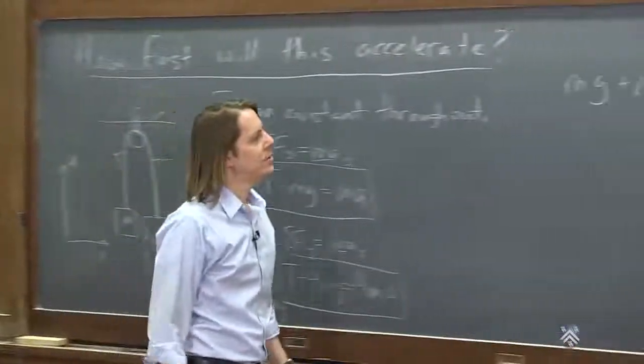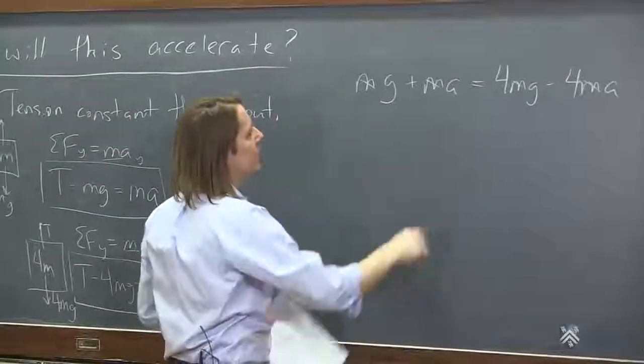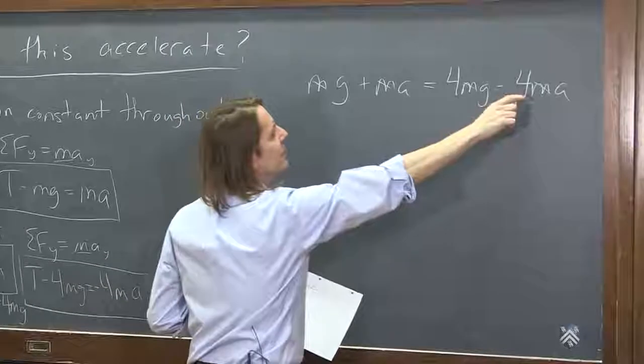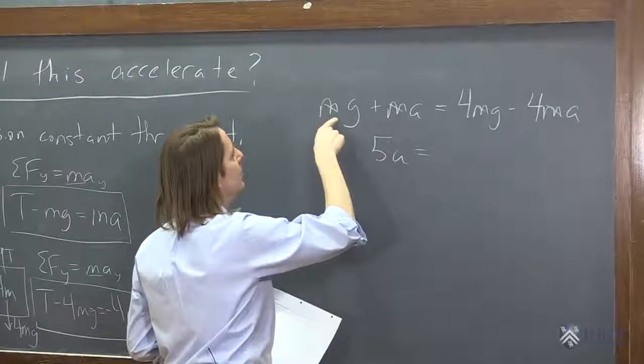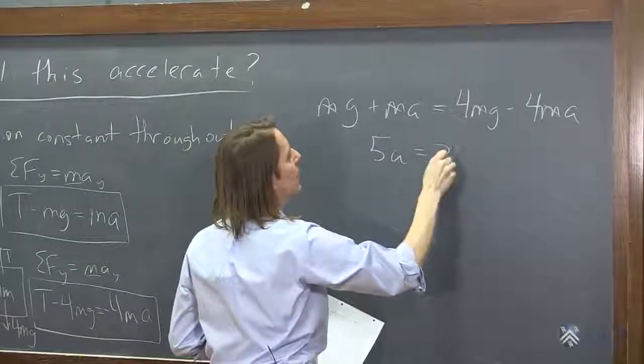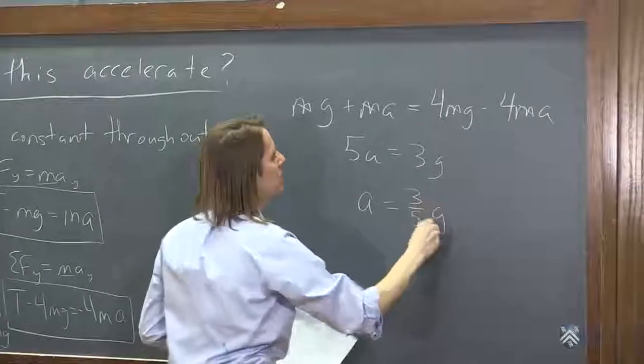So now we just solve for acceleration. All the M's go away. And let's see, we're solving for acceleration. So why don't we bring these four A's over here and have 5A, and bring this G over here equals 3G. So we see, ah, the acceleration is 3 fifths G.